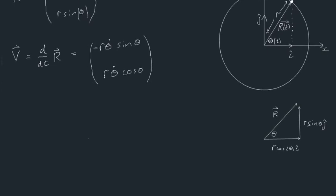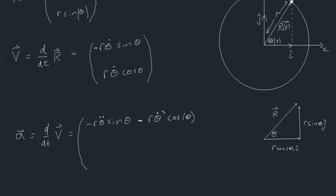Now let's find the acceleration, which is a bit more tricky — we need to use the chain rule because theta is a function of time. The acceleration is the derivative of our velocity vector with respect to time, giving us minus r·θ̈·sinθ minus r·θ̇²·cosθ in the i direction, and r·θ̈·cosθ minus r·θ̇²·sinθ in the j direction.